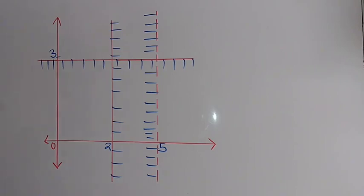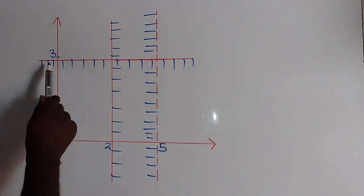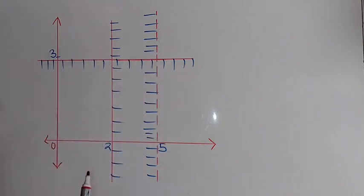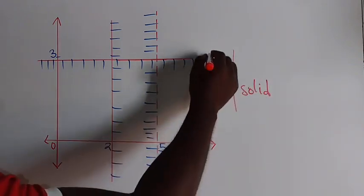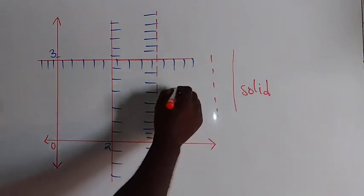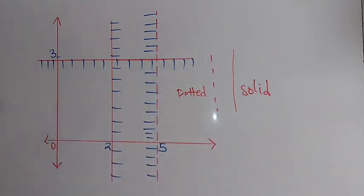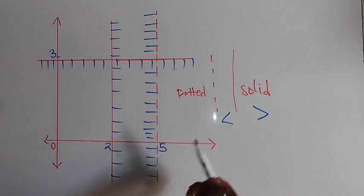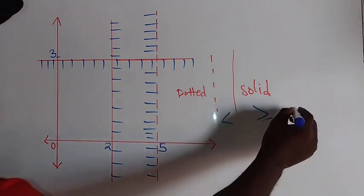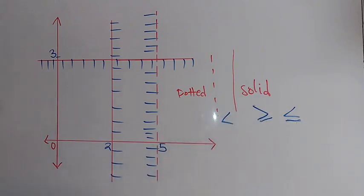Before we describe the inequalities, let us look at something. Whenever they ask you to describe the inequality showing the unshaded region, you need to know the lines. We have a solid line and a dotted line. Since we are dealing with inequalities, we know they use symbols such as greater than or less than. If you have a solid line, your inequality should have a greater than or equal to, or less than or equal to symbol.